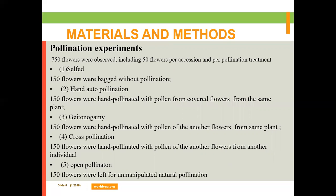For the pollination experiment, 750 flowers were observed, including 50 flowers per accession per pollination treatment. Five pollination types were used: natural self-pollination (bagged, without hand pollination, left for the flower to self-pollinate), hand auto-pollination (covering the flower and using pollen from the same covered flower), geitonogamy (using pollen from another flower on the same plant), cross-pollination (using pollen from a flower on a different individual plant), and open pollination (flowers left to natural pollination by wind or pollinators).